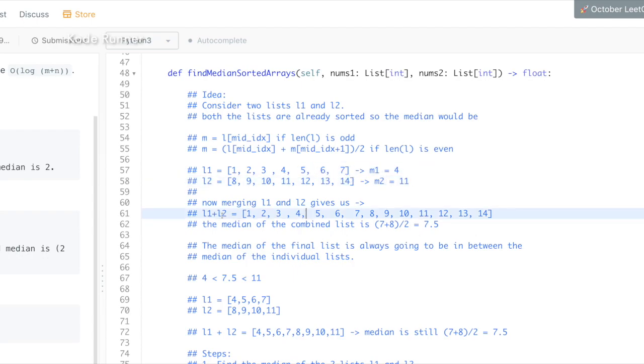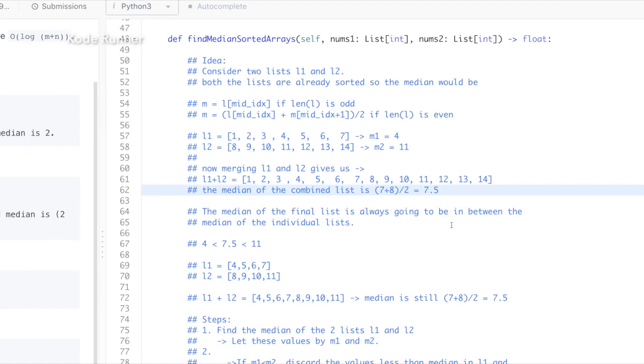The median of l1 is 4 and the median of l2 is 11. Now hypothetically, just assume that we merge the two lists l1 and l2 as follows. The median of the combined list is 7.5. Now if you look closely,